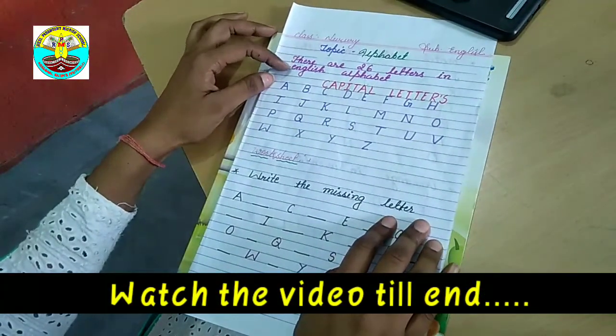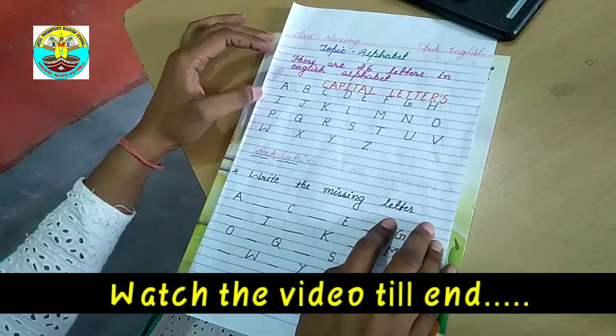There are 26 letters in English alphabet.